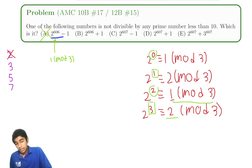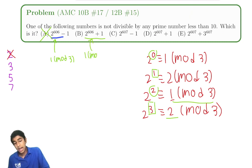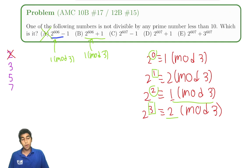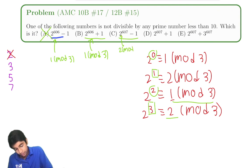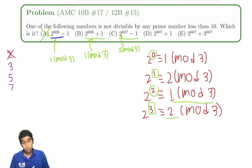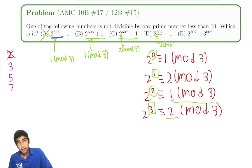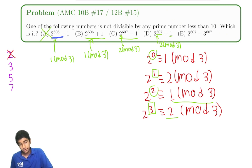2^606 plus 1: we know 2^606 is 1 mod 3, so adding 1 gives 2 mod 3 — not divisible by 3. For 2^607 minus 1: 607 is odd so 2^607 is 2 mod 3, and 2 minus 1 is 1 mod 3 — not divisible by 3. For 2^607 plus 1: 2^607 is 2 mod 3, and adding 1 gives a multiple of 3. So we can cross off that choice as well.